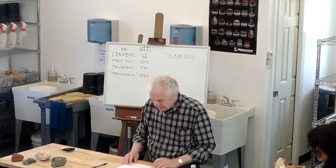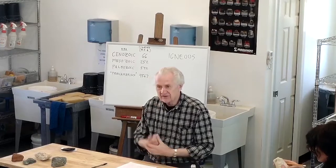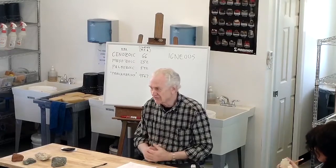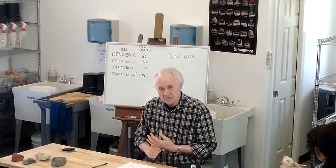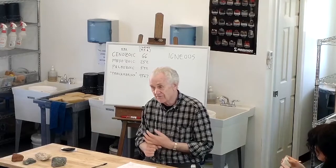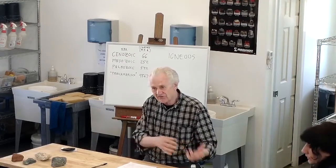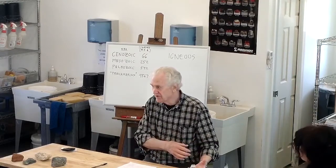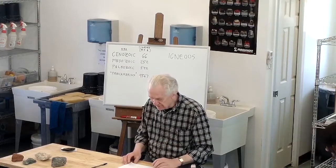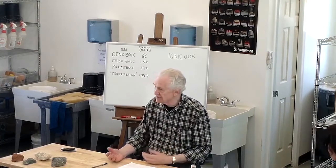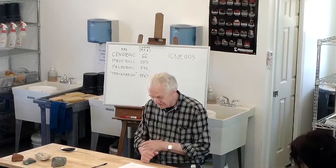Now, clays can be found in two different general locations. They can either be found more or less where they were formed, or they might be transported and moved somewhere else and then redeposited. Those are the two categories when we talk about natural clays: primary and secondary.